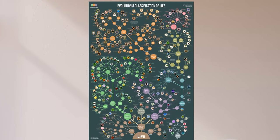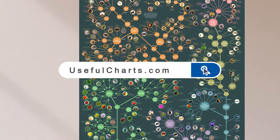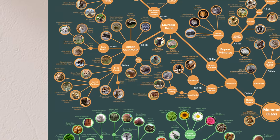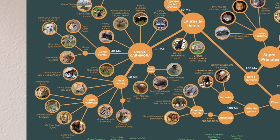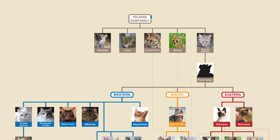Let's start by taking a look at my Evolution and Classification of Life chart, which is available from UsefulCharts.com. Everything that is orange on this chart is a mammal, but we're going to focus on just this one section – on the mammalian order known as carnivora. This order includes carnivorous animals such as bears and raccoons, but perhaps the two most well-known families in this order are the Canids and Felids. Canids are dogs and their close relatives, whereas Felids are cats, including big cats like lions and tigers.